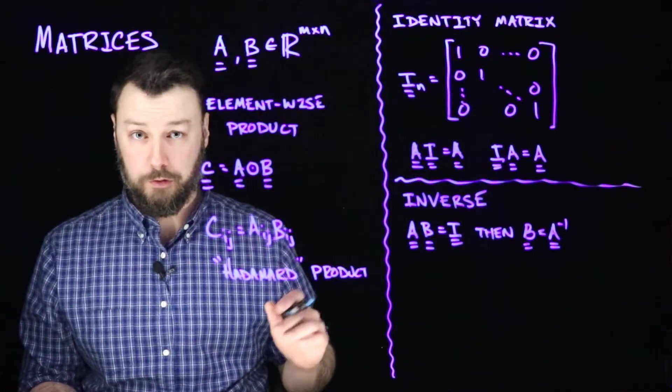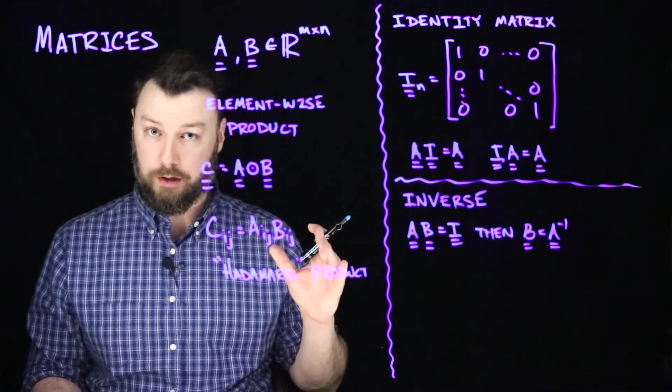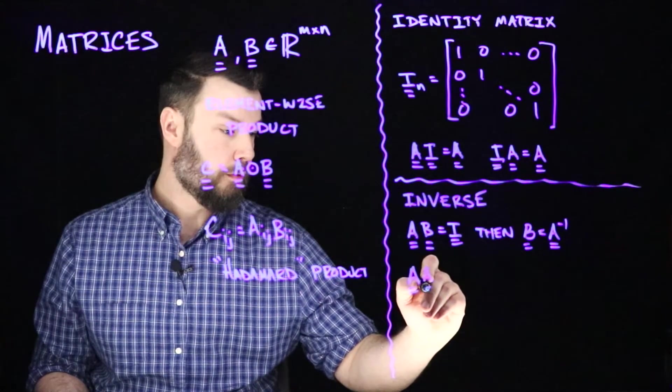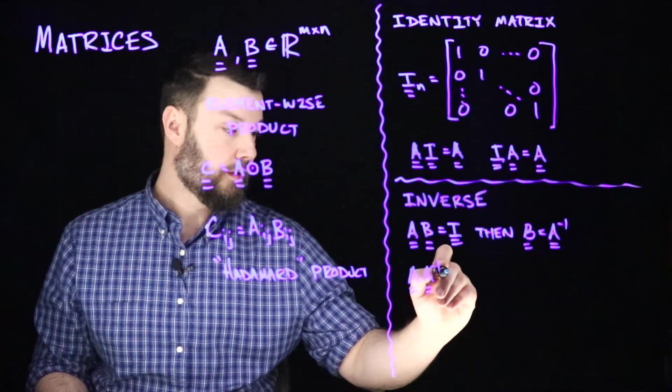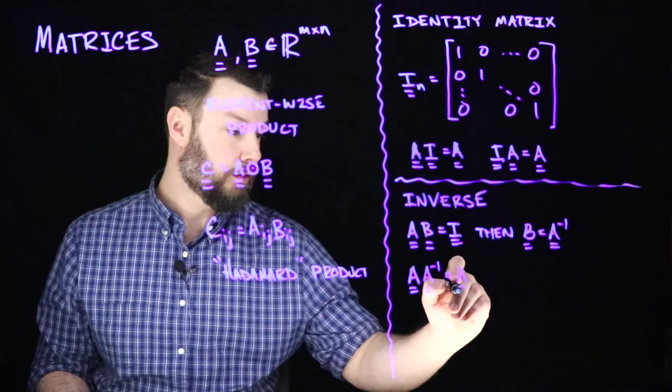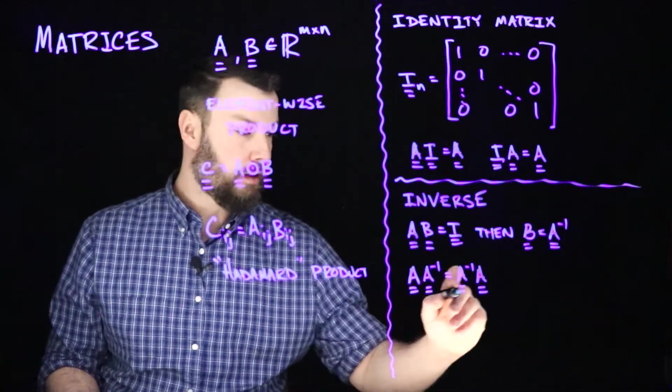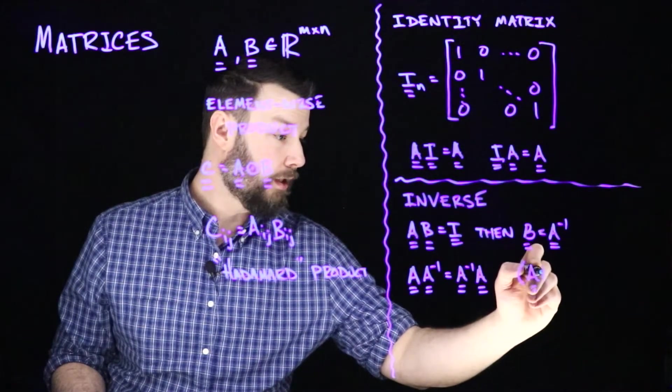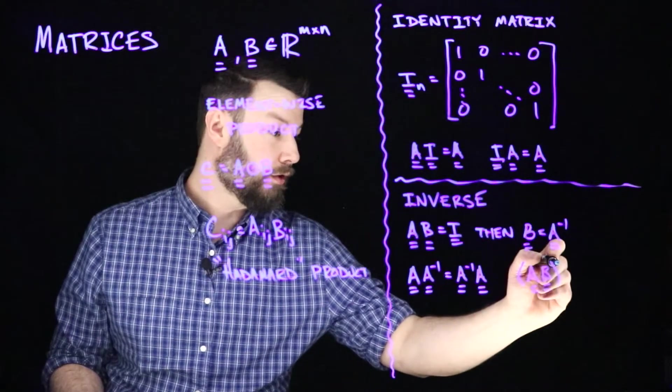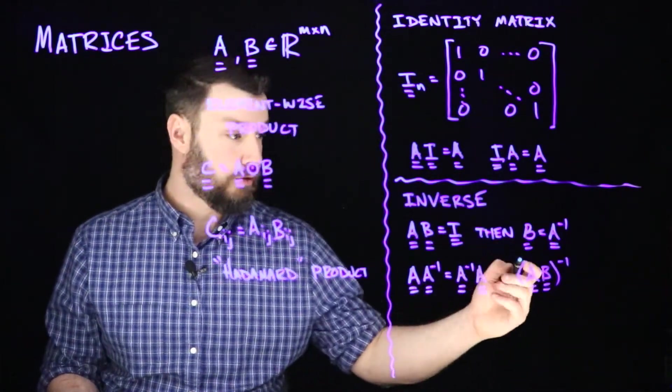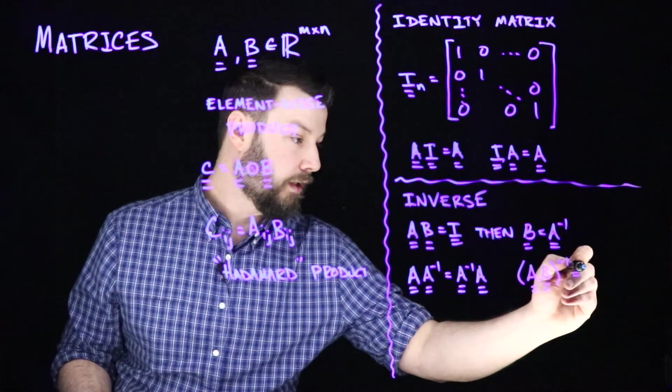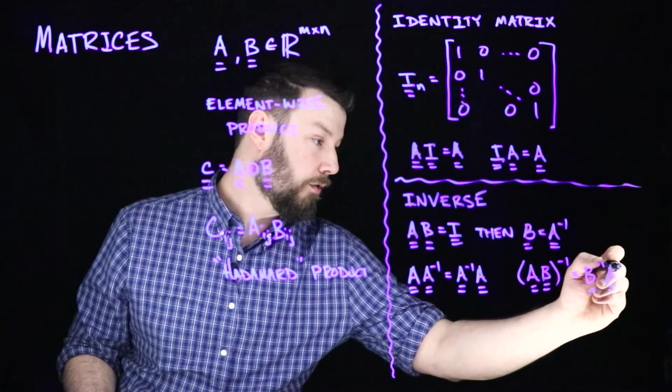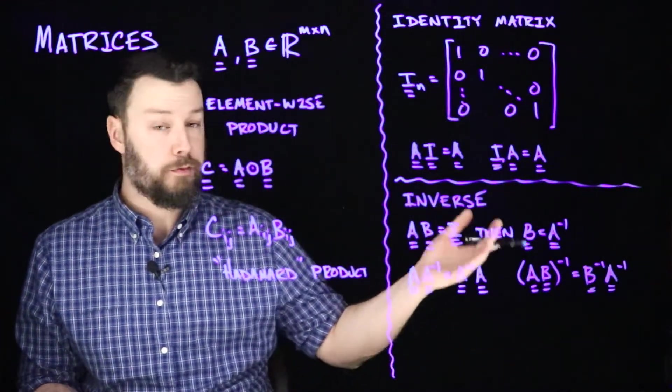A couple of useful properties to know in the case where the inverse exists is that it commutes. So A multiplied by A inverse equals A inverse multiplied by A. Similarly, if I take the inverse of a product AB, and both inverses exist and the inverse of the product exists, then I get B inverse A inverse. So it is the inverse of each of them with the order switched.